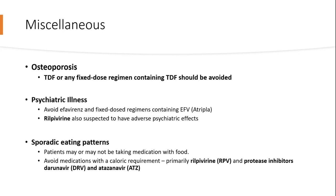Other smaller considerations for choosing ART: for osteoporosis, the old formulation of tenofovir should typically not be used, as bone and renal toxicities are greater compared to TAF. For psychiatric illness, avoid efavirenz and fixed-dose regimens containing it. Rilpivirine is also suspected to have some psychiatric effects. For patients with sporadic eating patterns, avoid treatments with a caloric requirement for absorption — that includes rilpivirine and protease inhibitors.